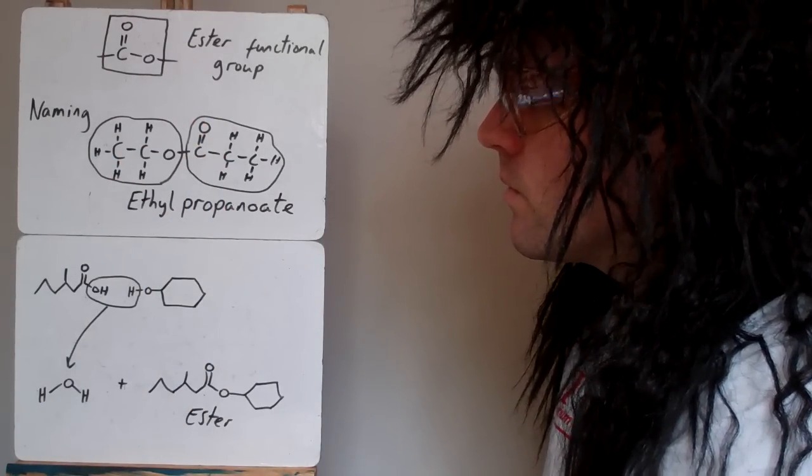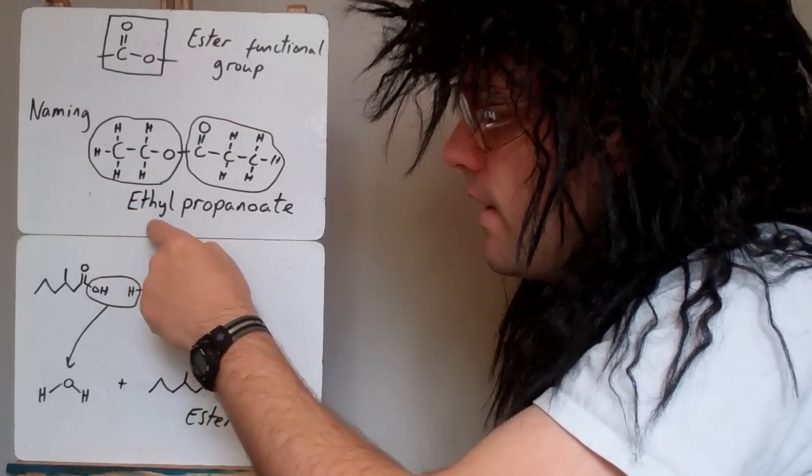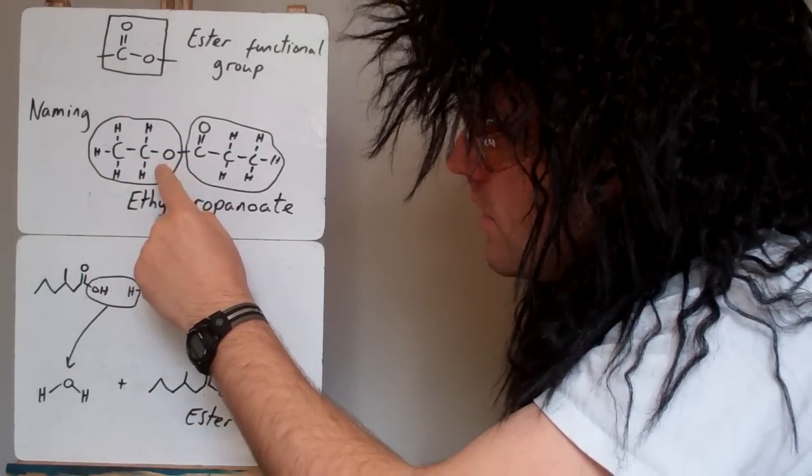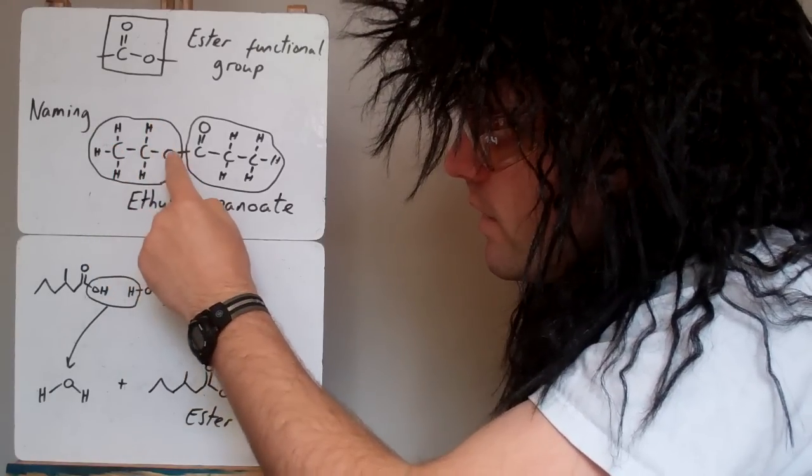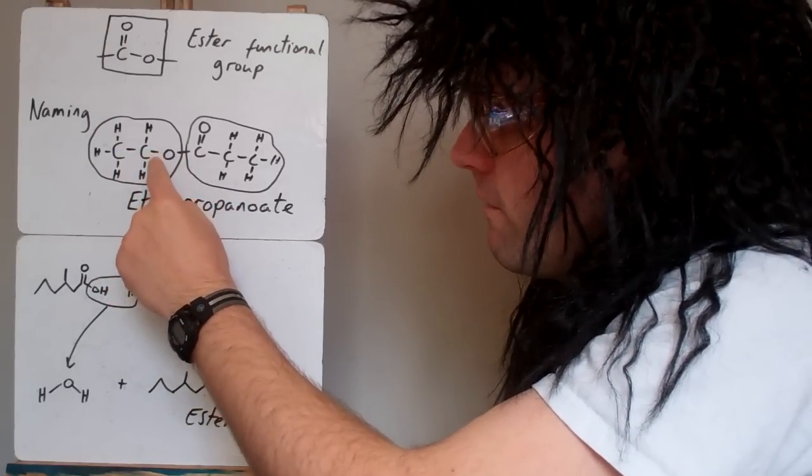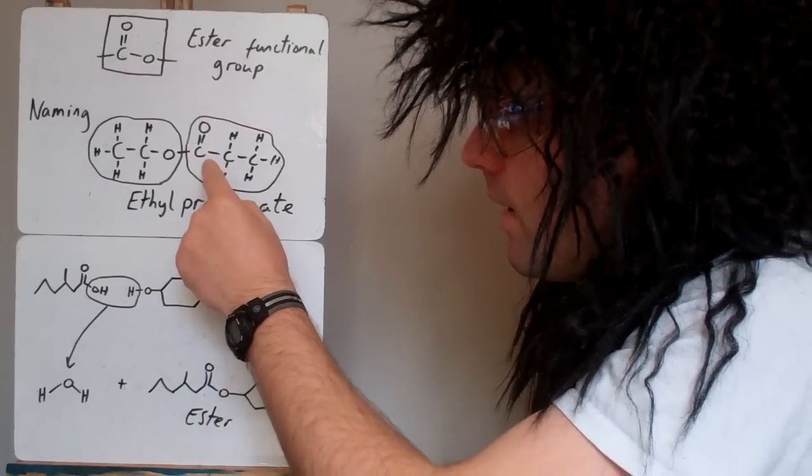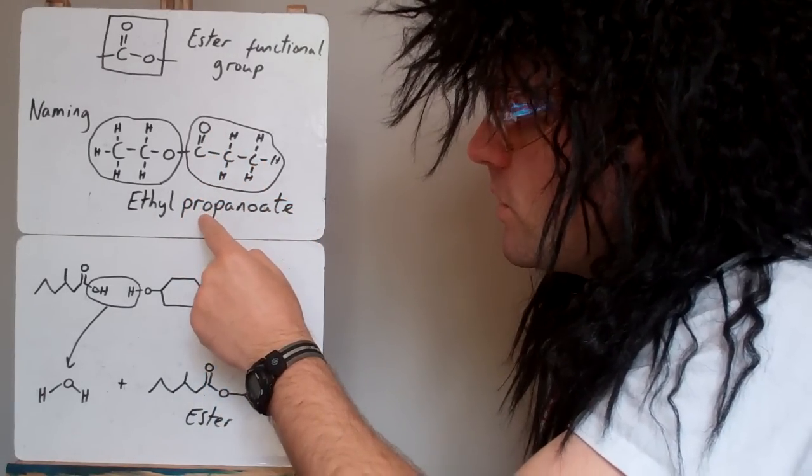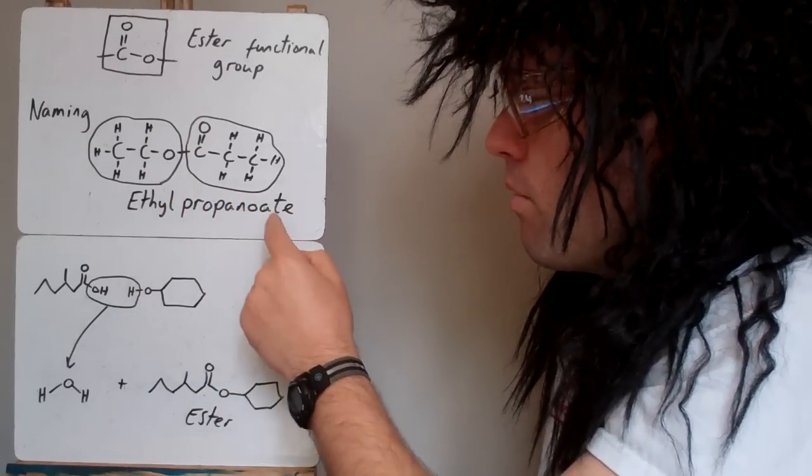When we name them, the bit that goes first, the start of the name, comes from the alcohol. In this case, we can see this must have come from the alcohol because it's got a carbon single bond to oxygen, no double bond O here. This wasn't a carboxylic acid originally. Two carbons—it would have been ethanol, so the start of the name is ethyl. Then the part that came from the carboxylic acid, you can tell that because it's got the bit with the double bond O. It's got one, two, three carbons, so that's propanoate. It would have been propanoic acid, so we call it propanoate. It's ethyl propanoate.